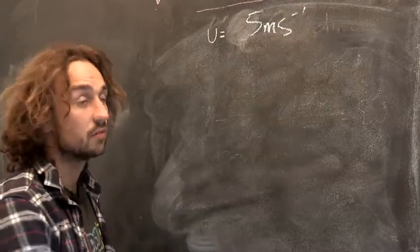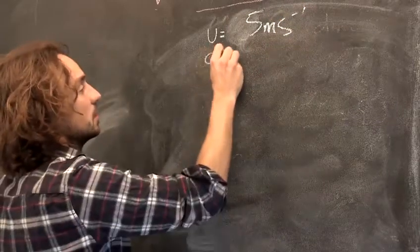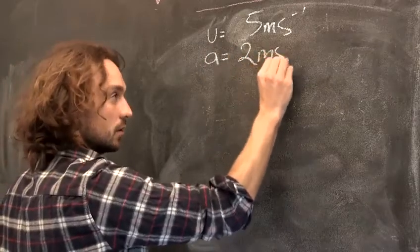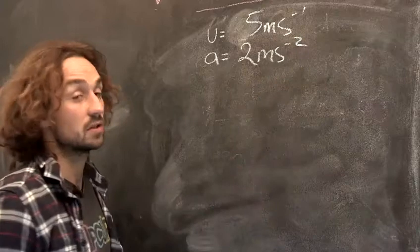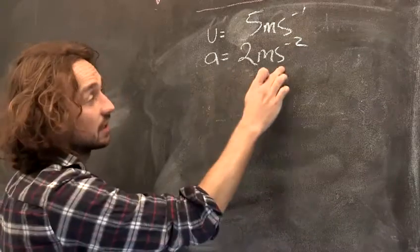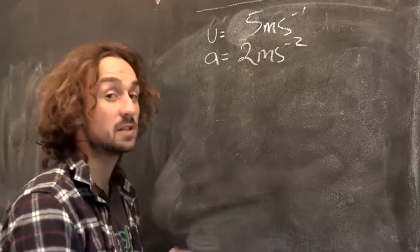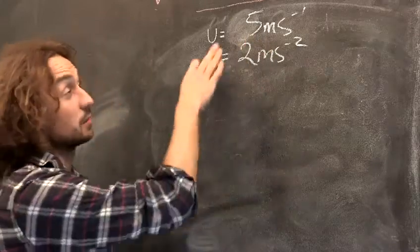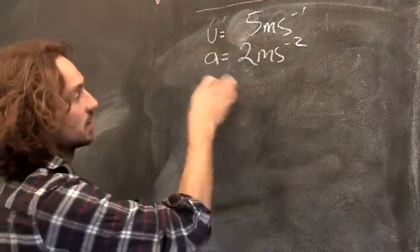And then I start accelerating. I try and run a bit faster. So, let's say my acceleration is two. That's how we write acceleration. So, this means that for every second, I'm increasing my speed by two meters per second. So, one second later, I'll be traveling at seven. The next second, nine.